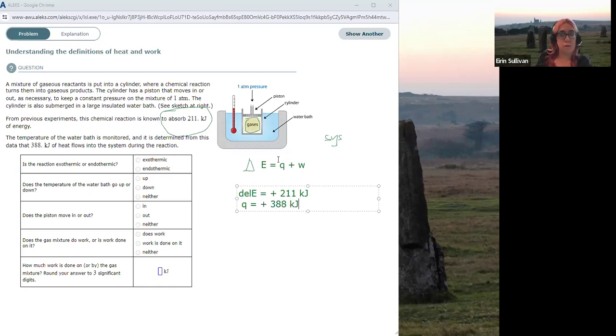So what we are solving for is work. So we're going to rearrange and solve for work. So work is going to be delta E minus Q. Okay, let's stick those numbers in. So 211 minus 388 is going to give me a value for work of minus 177.